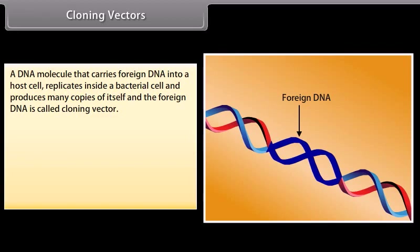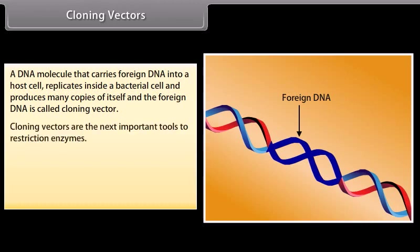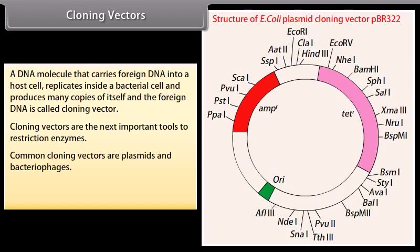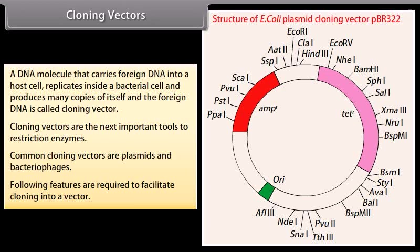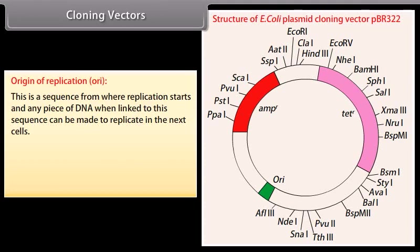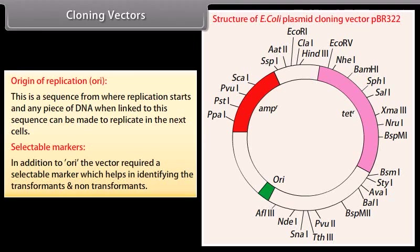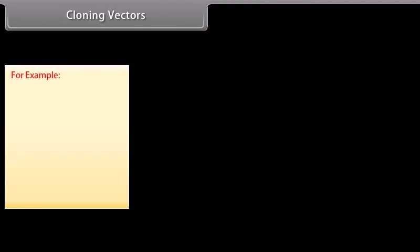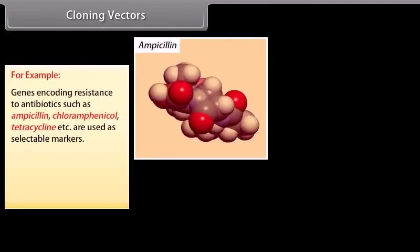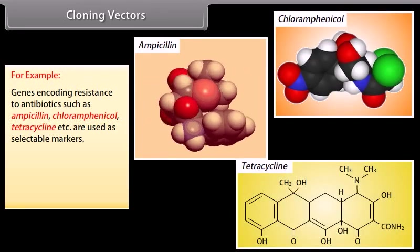Cloning vectors: A DNA molecule that carries foreign DNA into a host cell, replicates inside a bacterial cell, and produces many copies of itself and the foreign DNA is called a cloning vector. Common cloning vectors are plasmids and bacteriophages. Features required to facilitate cloning into a vector include: origin of replication (ORI) — a sequence from where replication starts, and any piece of DNA linked to this sequence can be made to replicate; and selectable markers — which help in identifying transformants and non-transformants. Examples of selectable marker genes include resistance to antibiotics such as ampicillin, chloramphenicol, and tetracycline. Transformation is the process by which a DNA piece is introduced into a host bacterium.